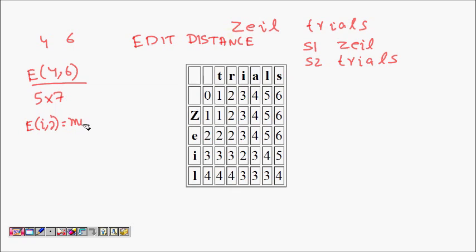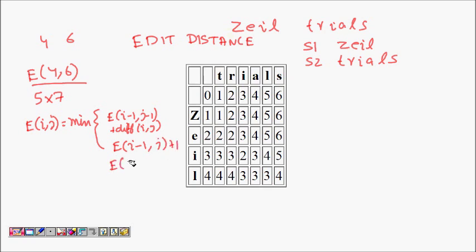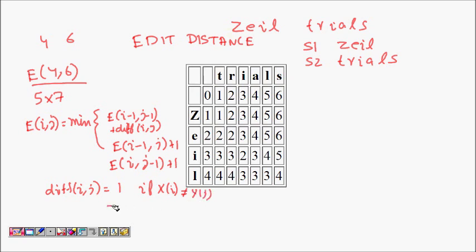...e(i-1, j-1) plus diff(i, j), or e(i-1, j) plus 1, or e(i, j-1) plus 1. And diff(i, j) equals 1 if x[i] is not equal to y[j], and equals 0 if x[i] is equal to y[j]. Now we will try to slowly calculate this using the table we have already constructed.